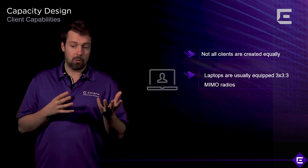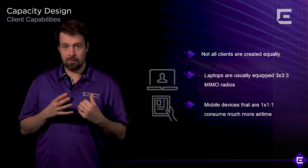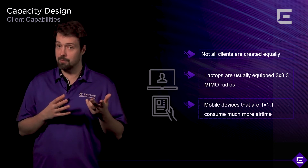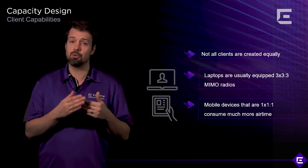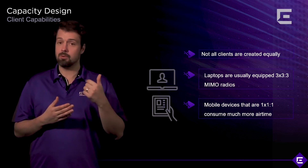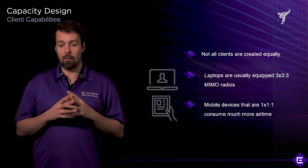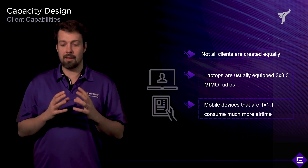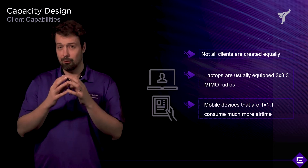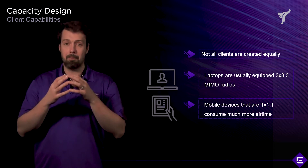Smartphones will usually have 1x1 through 1 — so 1Tx chain, 1Rx chain, 1 spatial stream — or at maximum 2x2 through 2: 2Rx chains, 2Tx chains, and 2 spatial streams. The reason why we want mobile devices to have a lower number of radio chains is battery life.